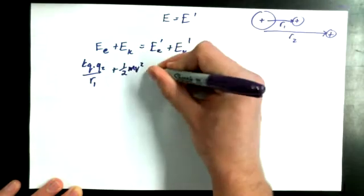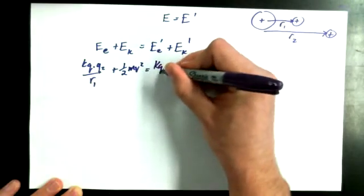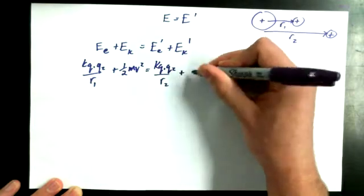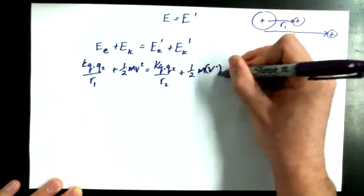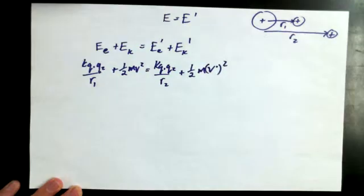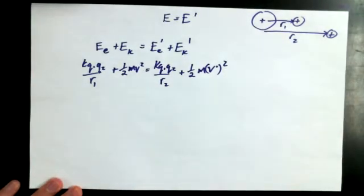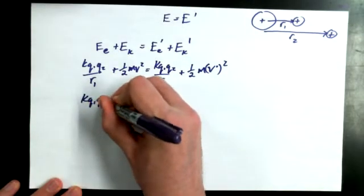And the electric potential energy, as we said before, would be equal to kq1q2 over r1 plus the kinetic energy would just be one-half mv squared, electric potential energy after would be kq1q2 over r2, and I guess we could say one-half mv primed squared.